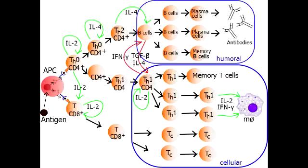T-Helper 2 cells secrete interleukin 4, interleukin 5, interleukin 10, and interleukin 13. Remember that interleukin 4 and interleukin 10 are what inhibit T-Helper 1 cells.